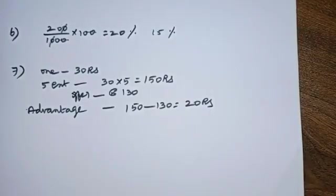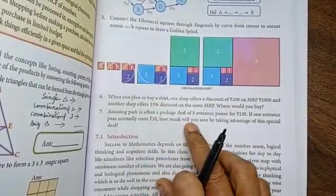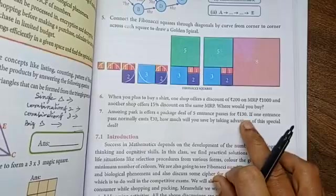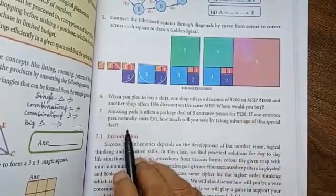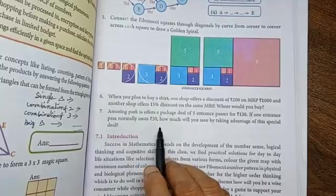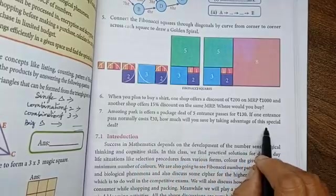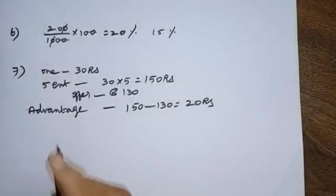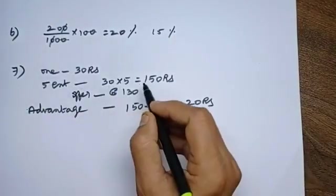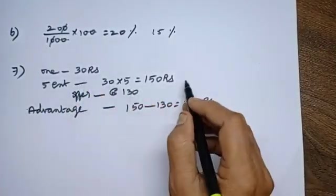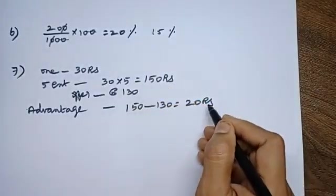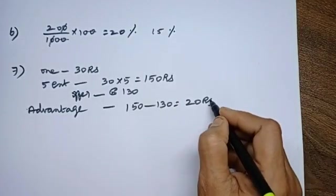Next, seventh one. Amazing park offers a package deal of 5 entrance passes for rupees 130. If one entrance pass normally costs rupees 30, how much will you save by taking advantage of this special deal? Same only. First one entrance fee 30. So, you find 5 entrance fees. That is 30 into 5, 150 rupees. Offer 130. So, advantage for 150 minus 130, 20 rupees.